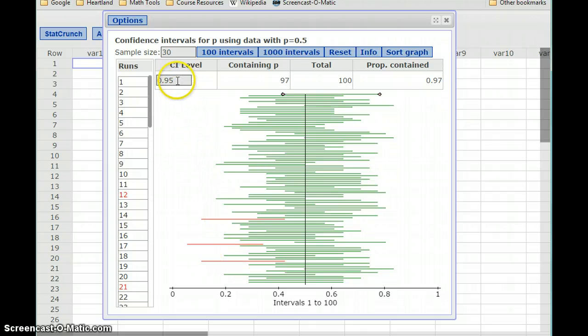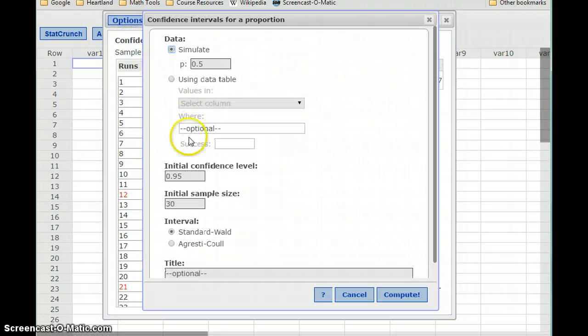This confidence interval level, CI level, is a value that we can set to help control how often we want this process to be successful. So we could go back and we could lower that confidence level. Say let's make it something quite a bit smaller, like 80%.